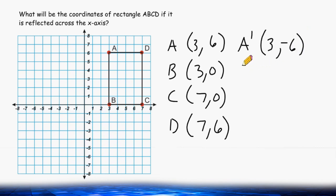So for B, the transformed point is going to be (3, 0). And the opposite of 0 is actually itself, 0.